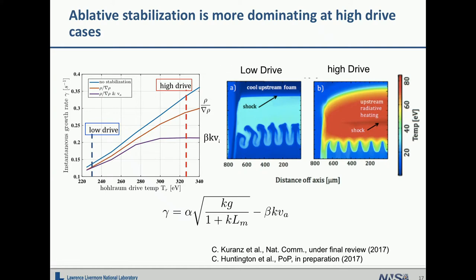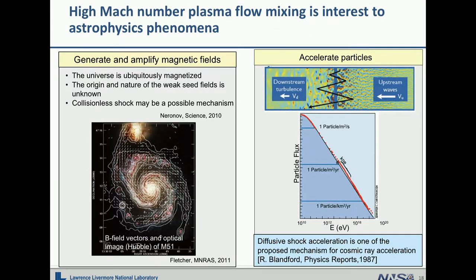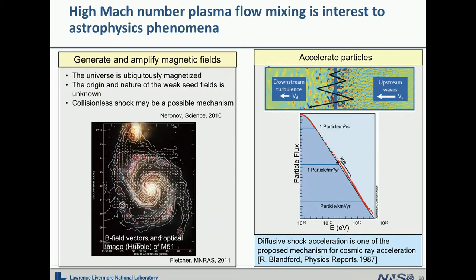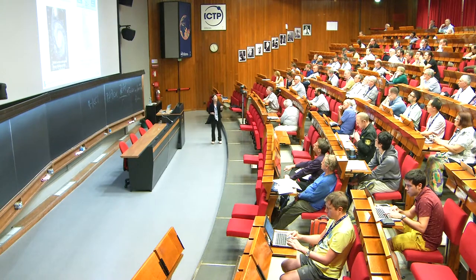One paper is already accepted by Nature Communications, and we are preparing another one describing this phenomenon in more detail. The remaining topic is collisionless shocks — high Mach number plasma flow mixing is of great interest to the astrophysical community. We are interested in how plasma flow mixing controls collisionless shock formation, whether they transition into a turbulent regime, and how that creates magnetic fields in the universe.